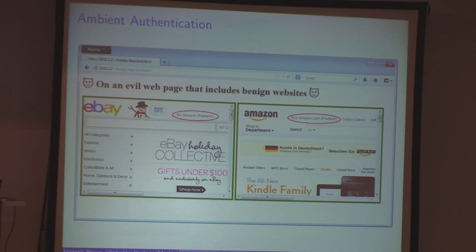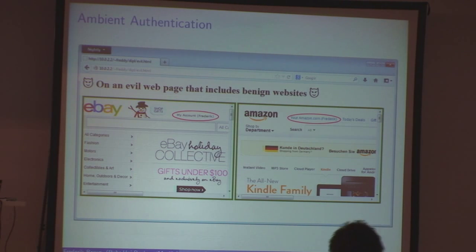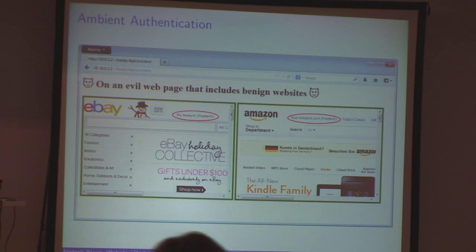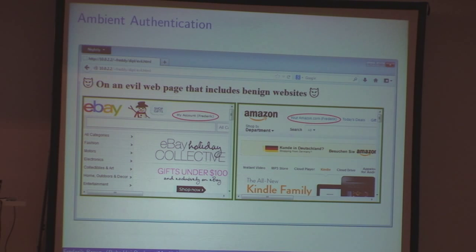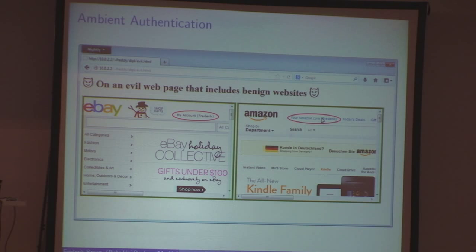That means an evil web page can trigger your browser to render eBay.com or Amazon.com, and we've seen that it can cause a lot of trouble, for example in Paul Stone's talk where we actually read all the pixels. In general it's critical to have the capability to interfere with other browser sessions. The browser always happily includes all the session data. You can see that even though I'm on an evil page, it says on eBay this is my account, I'm logged in as Frederick. This is Amazon, I'm logged in as Frederick. Browser tabs don't really stand on their own — they are always interfering with each other.